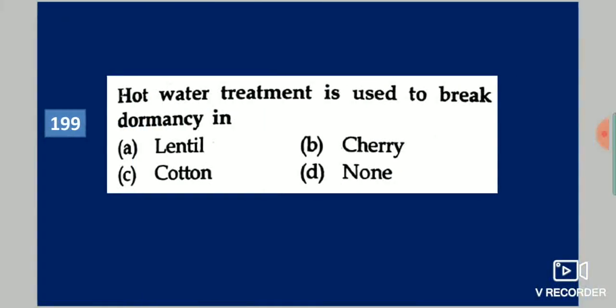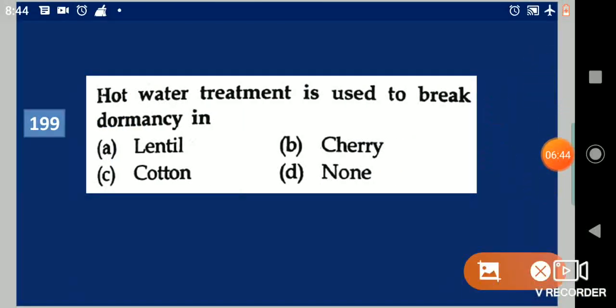Next question: Hot water treatment used to break dormancy in dash. Your options are: lentil, cherry, cotton, none. Your answer is lentil.